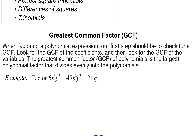First, you will look for the greatest common factor of the coefficients. Remember the coefficients are the numbers in front of the variables. Then once you find that greatest common factor, also look to see if there is a common variable factor — if there are letters that all of your terms have in common.